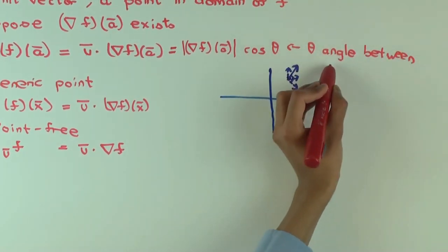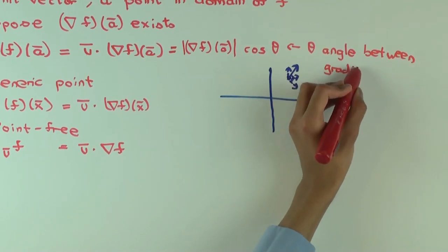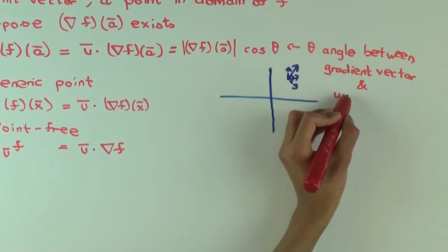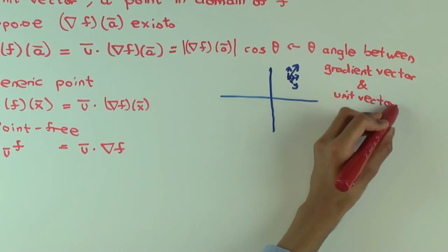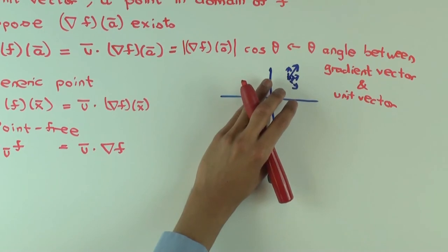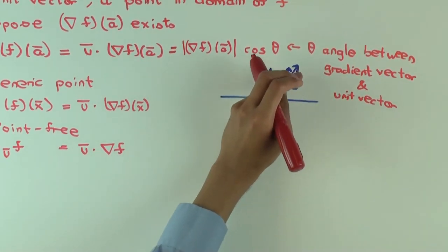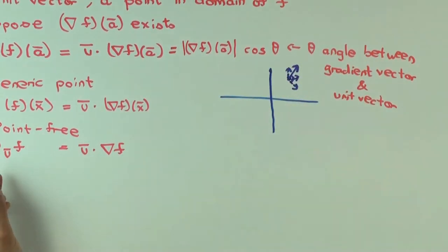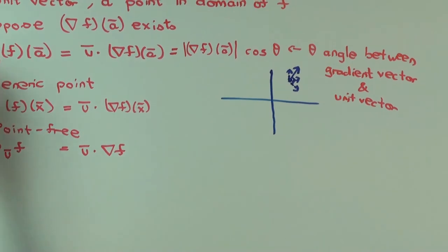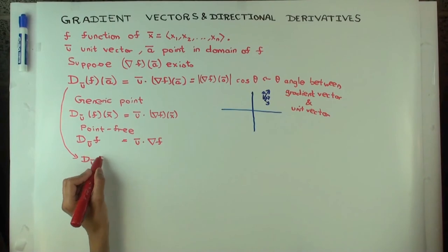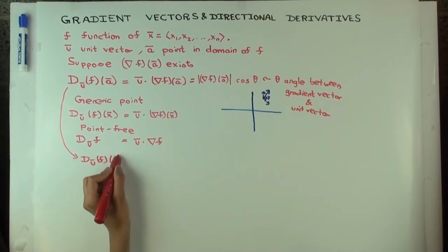There is one situation where this interpretation doesn't apply: when the gradient vector is zero, the directional derivative is zero in all directions. If the gradient vector is non-zero, the directional derivative will be zero only in directions perpendicular to the gradient. The closer the given direction is to the gradient vector's direction, the larger the directional derivative — so the directional derivative is maximized along the direction of the gradient vector.